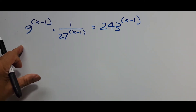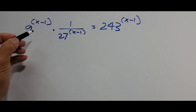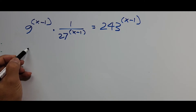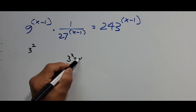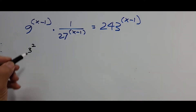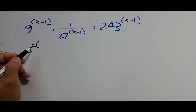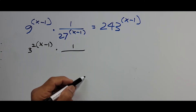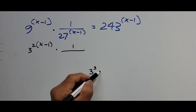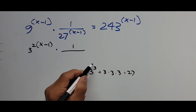Alright, so we start by getting a uniform base. 9 raised to x minus 1 can be written as 3 squared raised to x minus 1, since 3 squared is 9. And 1 over 27 is the same as 1 over 3 cubed, because 3 times 3 times 3 — that is, 9 times 3 — is 27. So that's 3 cubed.